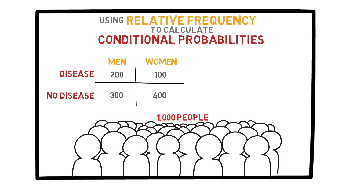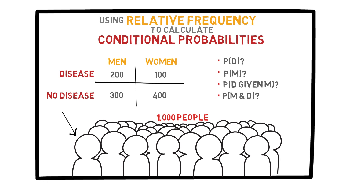Now I have a few questions for you. We pick a random person from this population and want to know: what is the probability that the person has the disease? Let's call this event D. I'd also like to know the probability that the randomly chosen person is a man — event M. Then, what is the probability that the person has the disease given that he is a man? That is, what is the probability of D given M? Lastly, find the probability of M and D — that is, the probability that the person is a man and also has the disease. Now would be a good time to pause this video and figure out the answers to these four questions, which we will go over shortly.